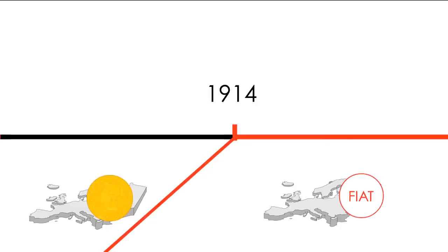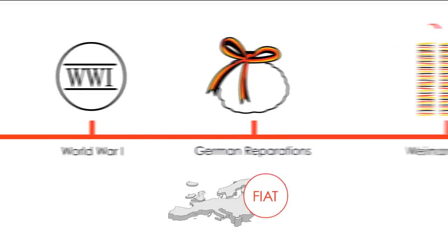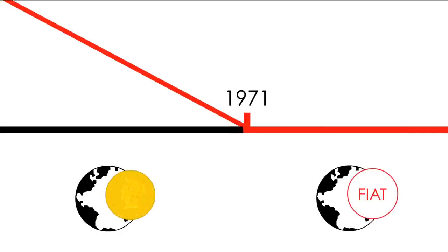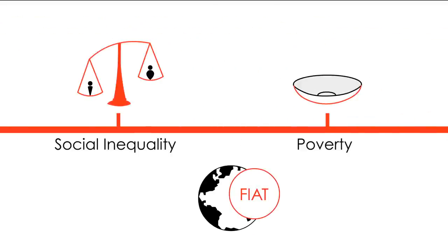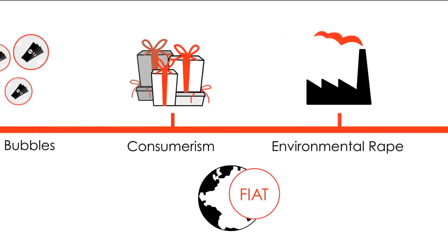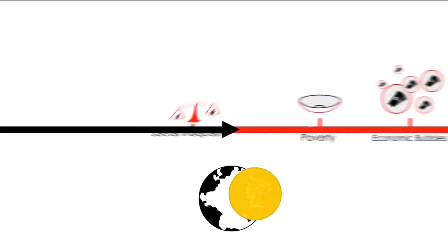Look at the mess the UK and Germany got the world into after leaving the gold standard in 1914: World War I, German reparations, Weimar inflation, the rise of Hitler, and so on. Look at the mess the world has got itself into since 1971, when this fiat system became the global norm: an endless sea of wars, debt, poverty, social inequality, economic bubbles, rampant consumerism, and environmental rape — none of which could ever have happened to anything like the same extent with that little bit of discipline and restraint imposed by gold.